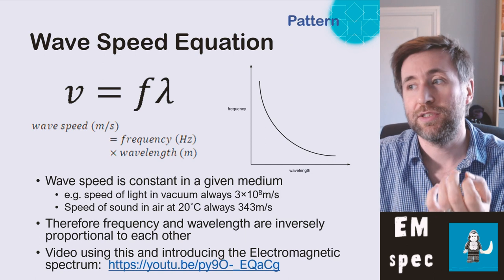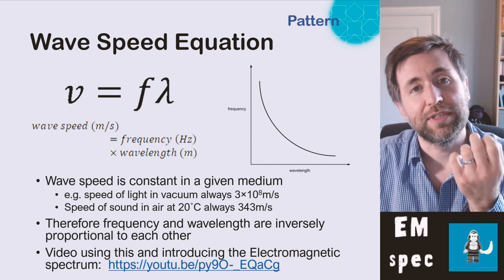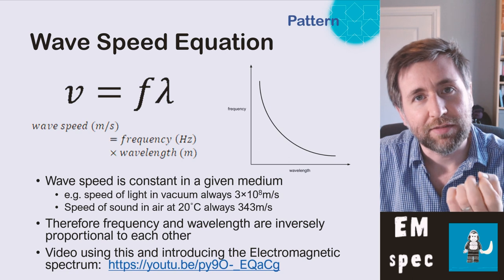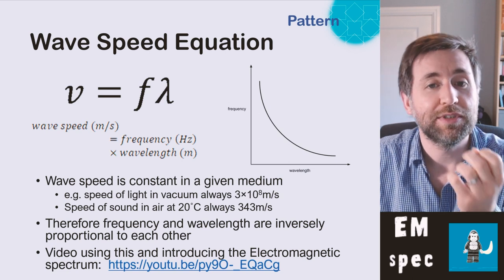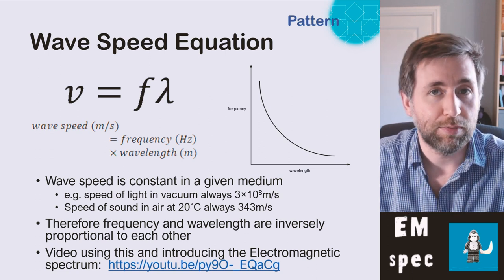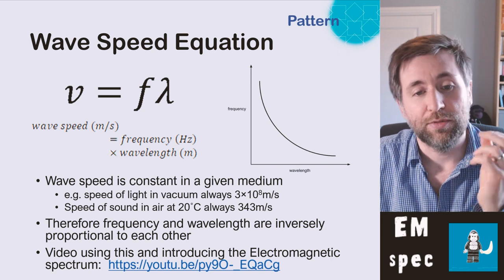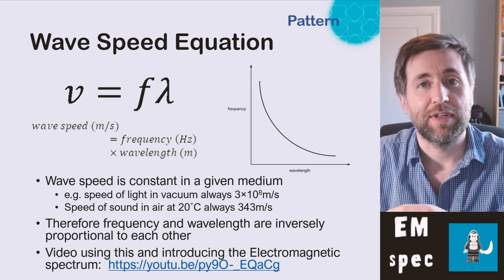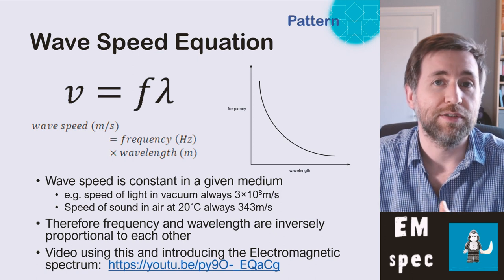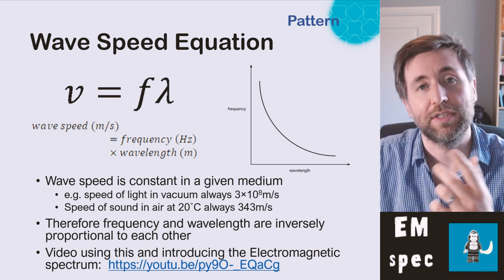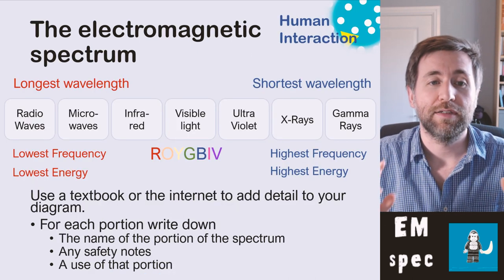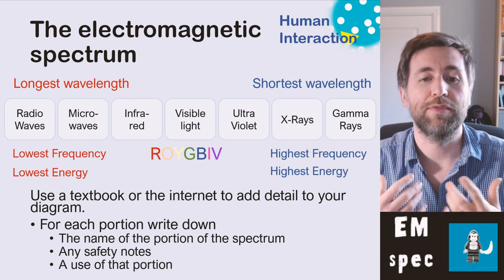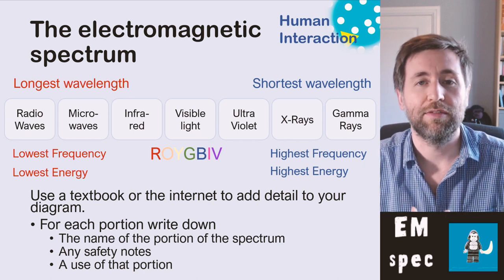Remember, this is all an application of the wave speed equation, which says that the speed of light is fixed in any given medium, so the frequency and the wavelength are inversely proportional to each other. The speed of light is always 3×10⁸. If you double the frequency, you halve the wavelength. Here they are in order, with the frequencies and the energies labelled on, and with the colours in the right direction.